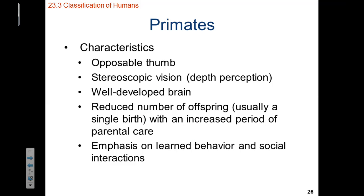Now, if we look at primates — and we, as human beings, are categorized as a primate — a key characteristic of a primate is that it has an opposable thumb, and that opposable thumb has a saddle joint within the hand.